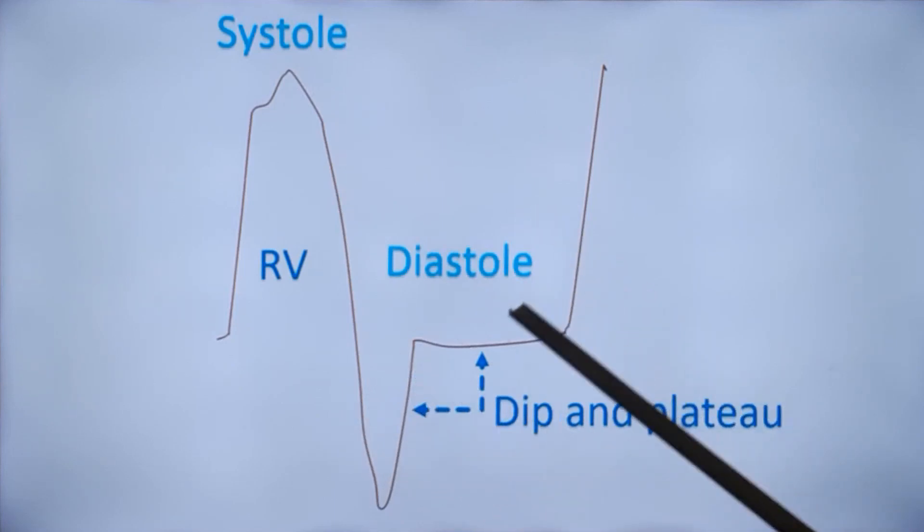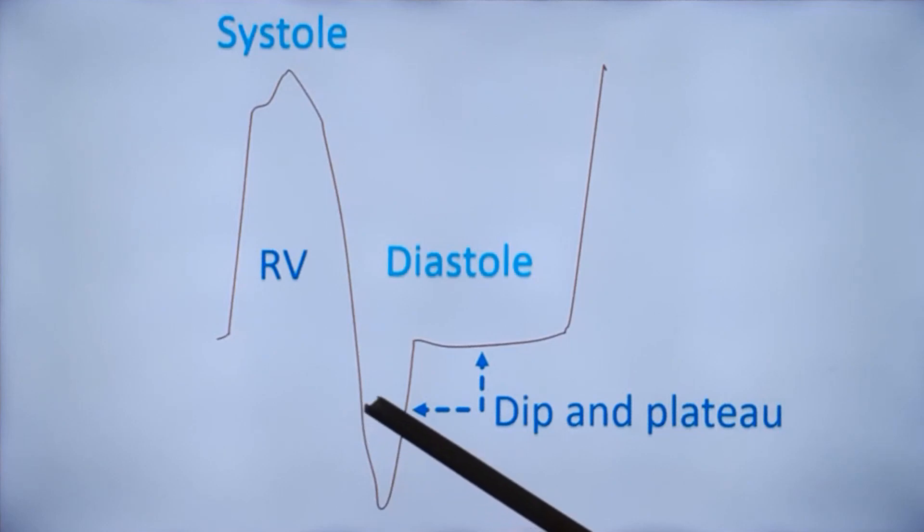In chronic constrictive pericarditis, the pericardial volume is restrained by the thickening and calcification, so that the total cardiac volume is fixed. It cannot expand beyond a particular limit.